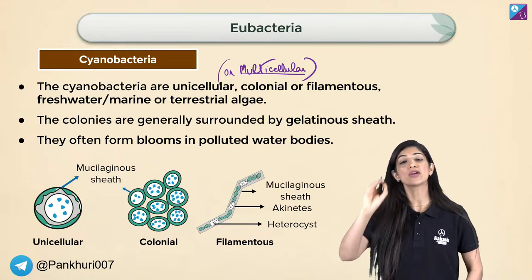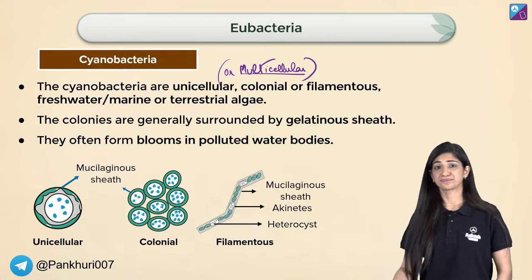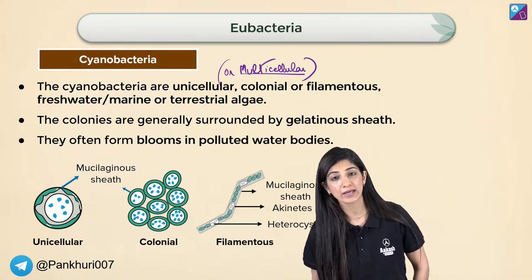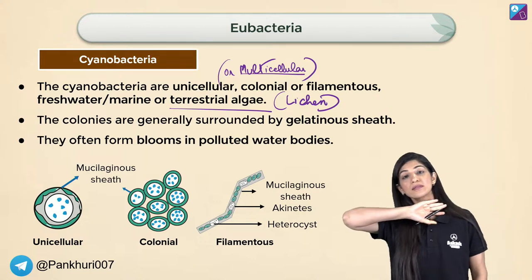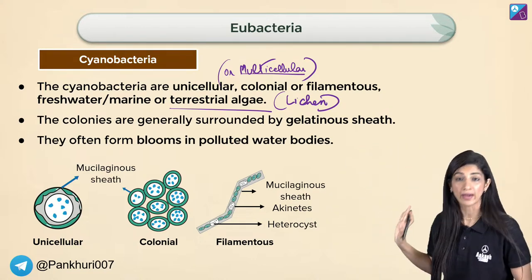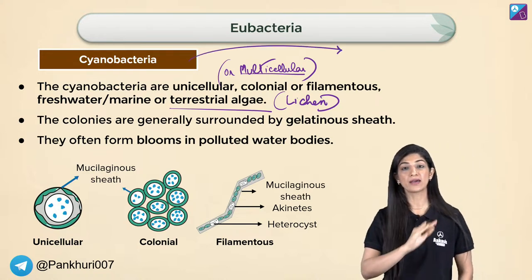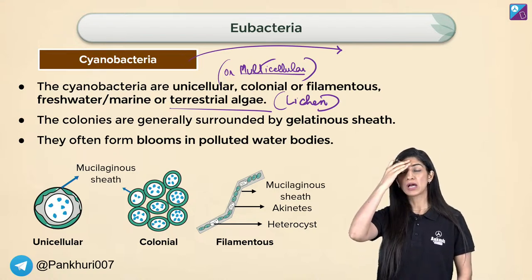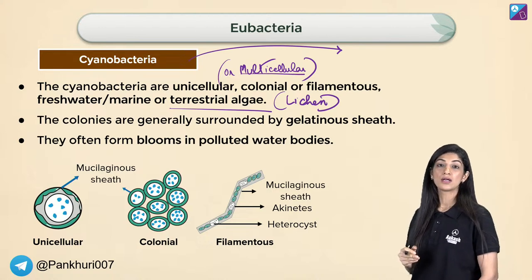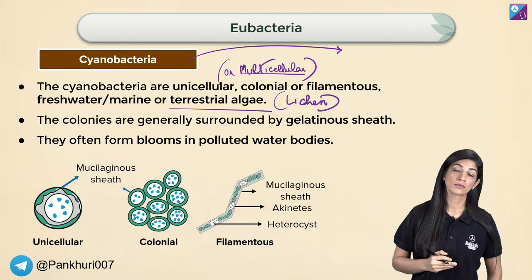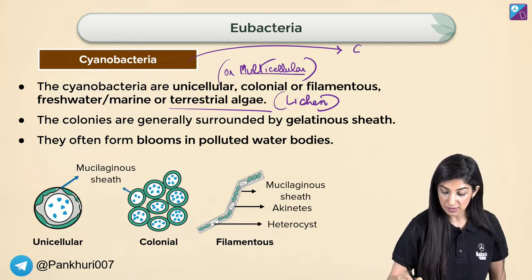Usually cyanobacteria are found in freshwater — ponds and lakes — sometimes marine. On land, cyanobacteria grow only when they get some symbiotic association, like in lichens. Cyanobacteria are the most friendly organisms in all kingdoms — they can form symbiotic relationships with protists, algae, bryophytes, ferns, and gymnosperms. Cyanobacteria are excellent symbiotic organisms.